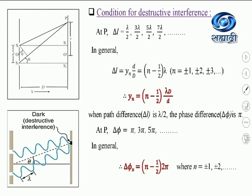In general, we can write delta phi_n, the phase difference between the two waves for the nth dark point, as equal to (n − 1/2)·2π, where n takes the values ±1, ±2, and so on. When n equals 1: (1 − 1/2)·2π = π, so phase difference is π and we get the first dark point. When n equals 2: (2 − 1/2)·2π = 3π, giving the second dark point. This continues for 5π, 7π, and so on. This is the general condition for destructive interference.